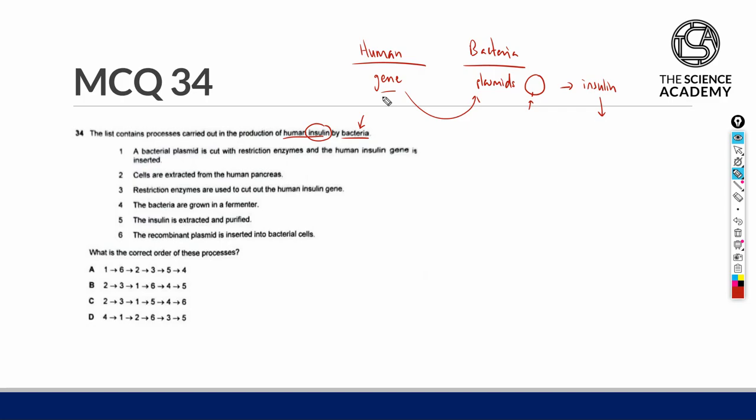The first step has to be obtaining this human insulin gene and the cells that we obtain these genes from must be from cells that are capable of producing insulin. These cells are the cells of the human pancreas, specifically the beta cells in the islets of Langerhans. Therefore, step 2 must be the first step where we extract these cells from the human organ which is the pancreas. Restriction enzymes are the enzymes that allow us to cut out that specific segment of the DNA that encodes for the insulin which is the insulin gene. Therefore, step 3 has to be the next step.